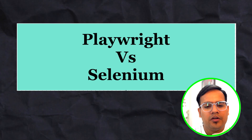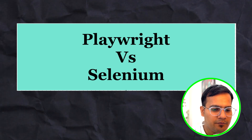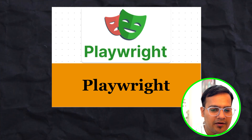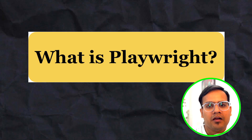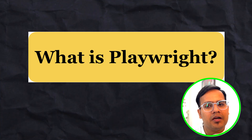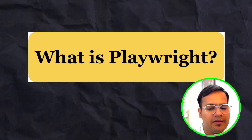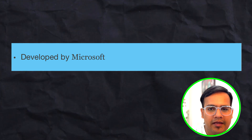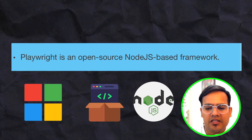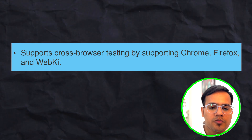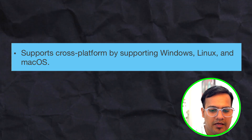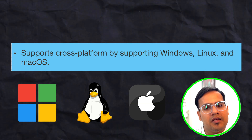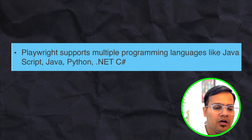So we are on the screen where we are going to discuss Playwright versus Selenium. Before getting into the comparison, let's talk about Playwright. Playwright is an automation testing tool that helps write automation test cases — not only UI automation but also API testing. Playwright was developed by Microsoft and is an open-source Node.js-based framework. It supports cross-browser testing, meaning test cases can be executed on multiple browsers, and it supports Windows, Linux, and macOS.